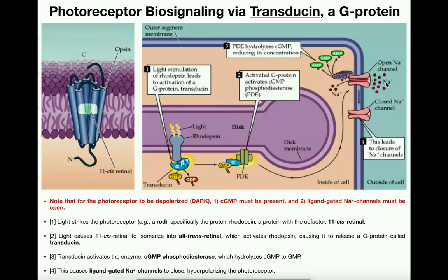But when we activate phosphodiesterase in the light, we get rid of cyclic GMP. Regular GMP can no longer keep these channels open, so these sodium channels close. Sodium is no longer coming into the cell, so there's no depolarization — and by default, if they're not depolarizing, they are hyperpolarizing. This is the microscopic biochemistry of the photoreceptor cell in light, causing the membrane to hyperpolarize.